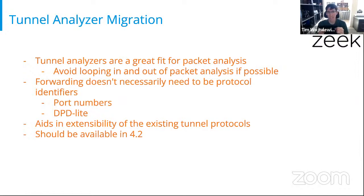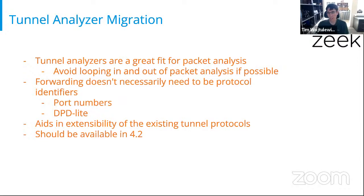The interesting thing is that forwarding doesn't necessarily need to be protocol identifiers anymore. This happened with UDP when we realized: when you go into a tunnel, they're generally based on port numbers — there's a standard set of port numbers that say you're going into this tunnel analyzer. All of the forwarding in packet analysis land is completely arbitrary. So the UDP analyzer looks at a port number and says, 'I have a tunnel analyzer over here that's matched to that port, so I'll just forward it on.'